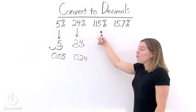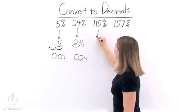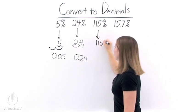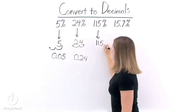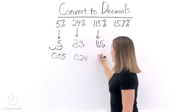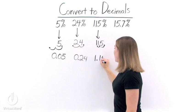Now, let's look at the next one, 115%. Well, 115% is a whole number, so the decimal point is right here. Now, we move it two places to the left, and we get the decimal 1.15.